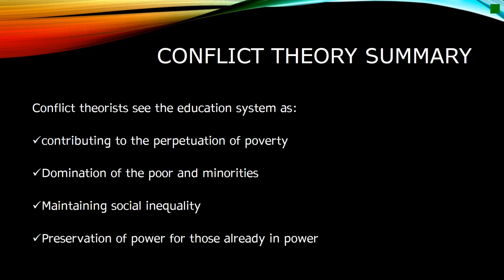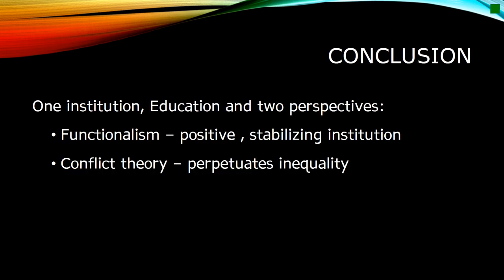Conflict theorists see the education system as contributing to the perpetuation of poverty, the domination of the poor and minorities, maintaining social inequality, and preserving the power of those who are already in power. One institution — education — and two very different perspectives. To a functionalist, education is a positive influence on society, preparing students for adulthood both academically and socially. To a conflict theorist, education represents a negative force in our society that not only creates inequality but serves to perpetuate inequality generation after generation.